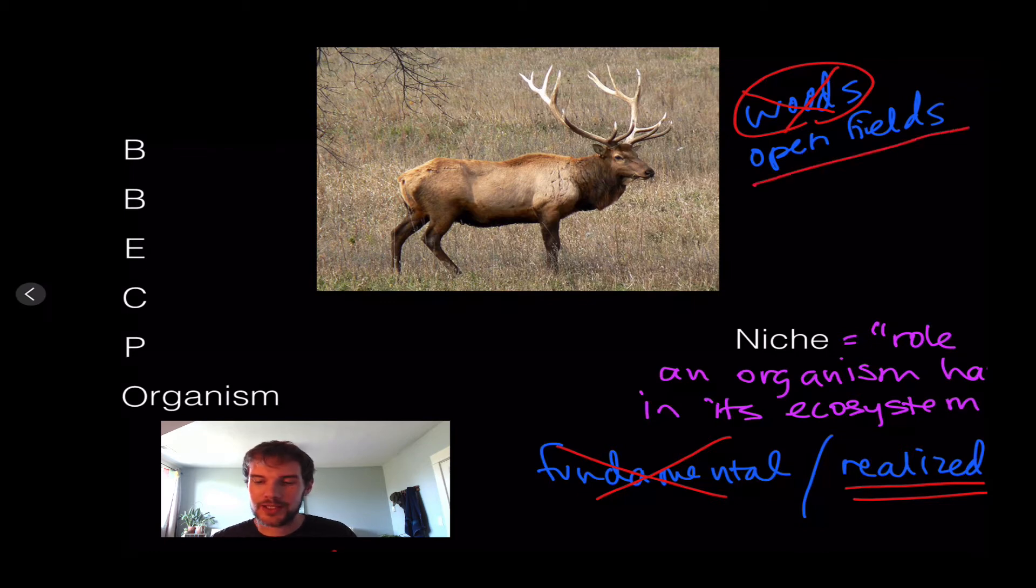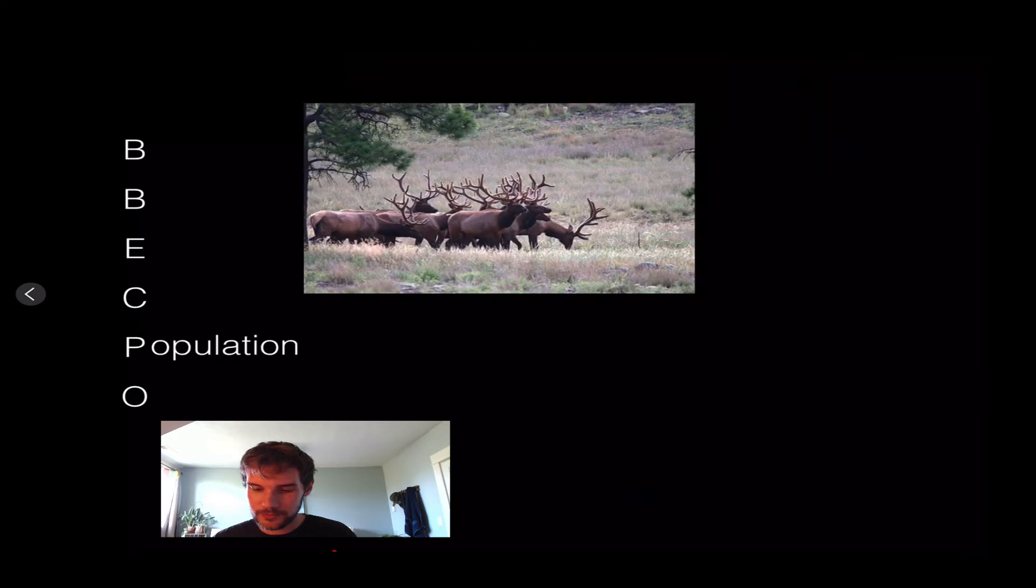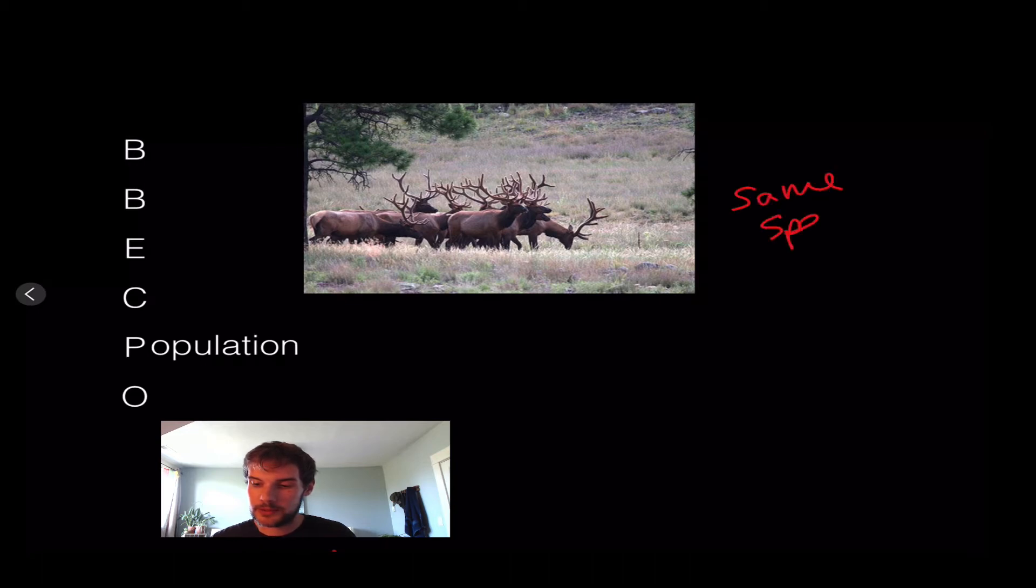If we have multiple individuals of the same species, we call that a population. Populations can have many members - bacteria populations have thousands and thousands, or it could be small like this one with 10 to 20 individuals, isolated from other populations in the area.